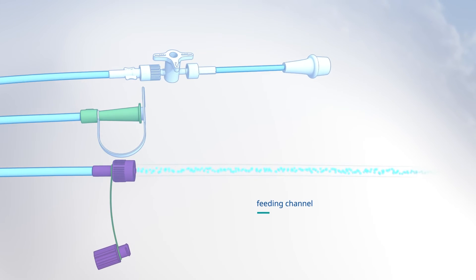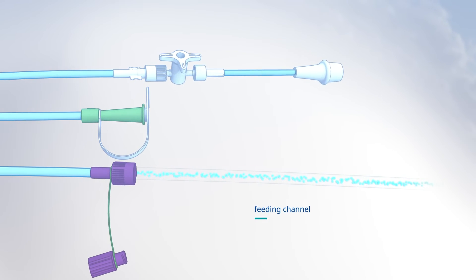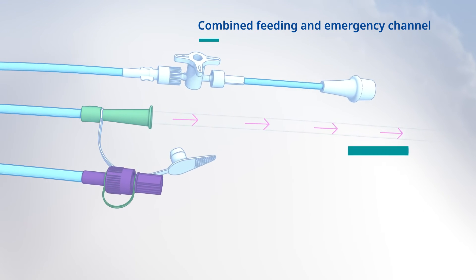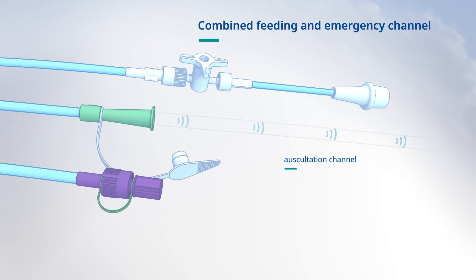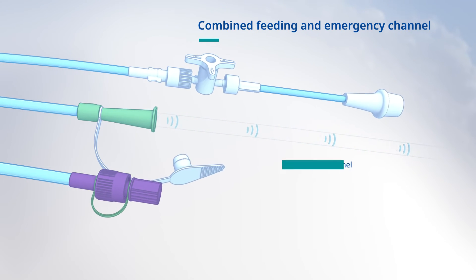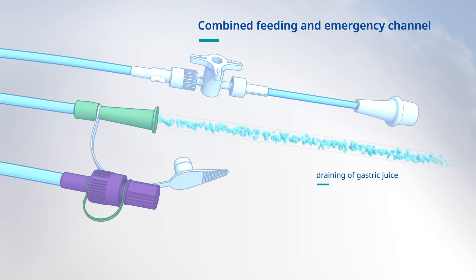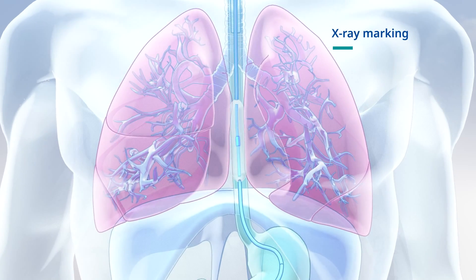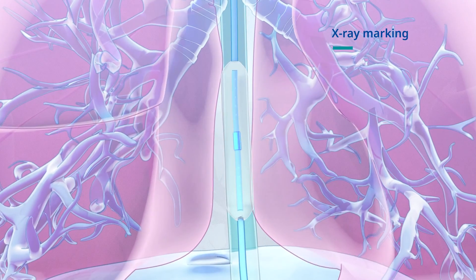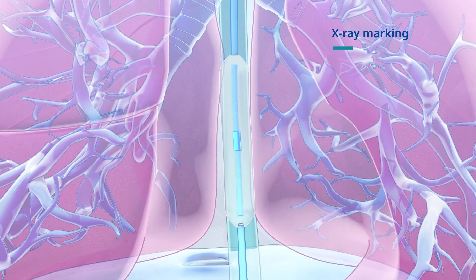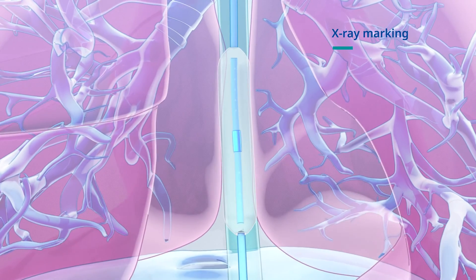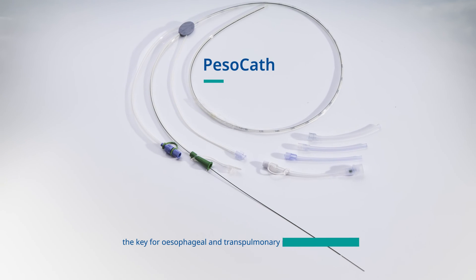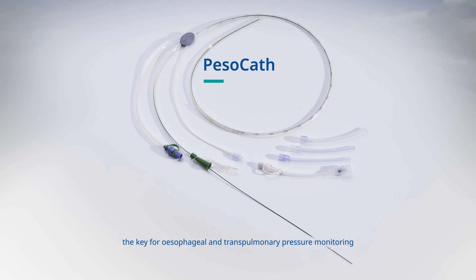The combined feeding and emergency channel permits auscultation during catheter placement despite the ENFIT connection. In an emergency, this can be used as a direct channel for rapid suctioning or for draining gastric juice. Because of the non-metallic X-ray markings, the esophageal catheter does not have to be removed prior to MRI diagnosis. PESO-CAD — the key for esophageal and transpulmonary pressure monitoring.